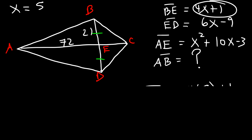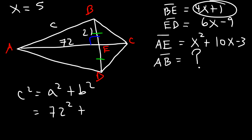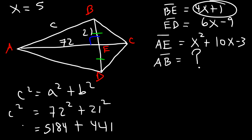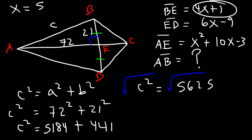Since the diagonals meet at right angles, triangle AEB is a right triangle. Using the Pythagorean theorem, c² equals 72² plus 21², which is 5184 plus 441 equals 5625. Taking the square root, the hypotenuse AB equals 75. That is the answer.